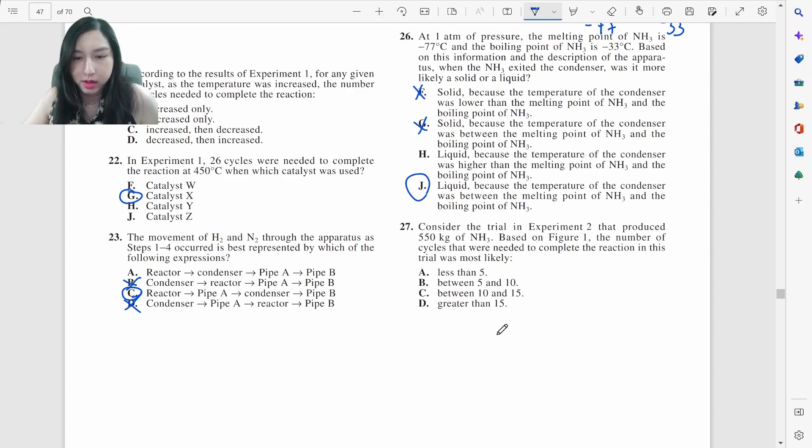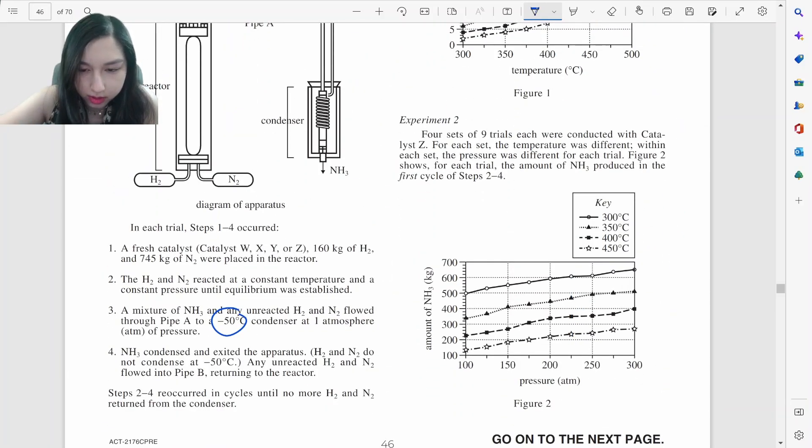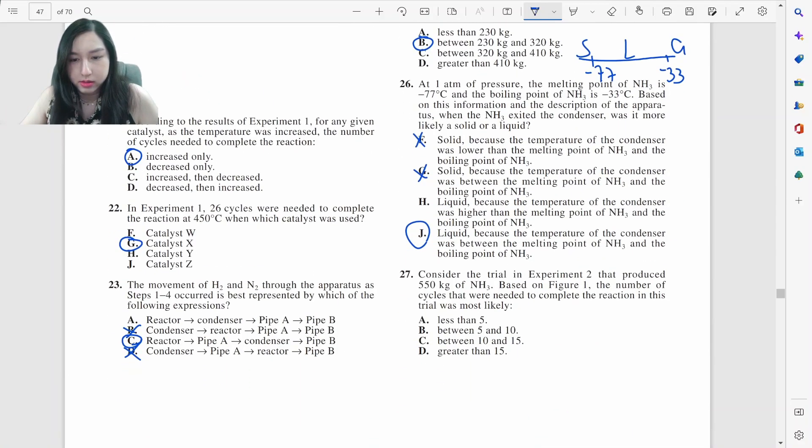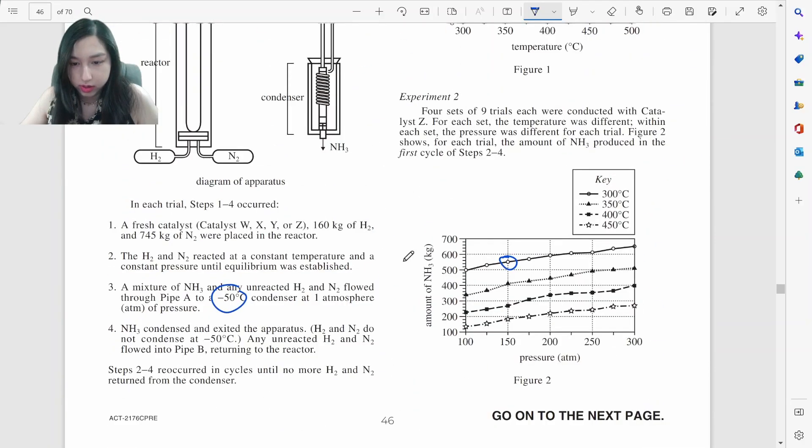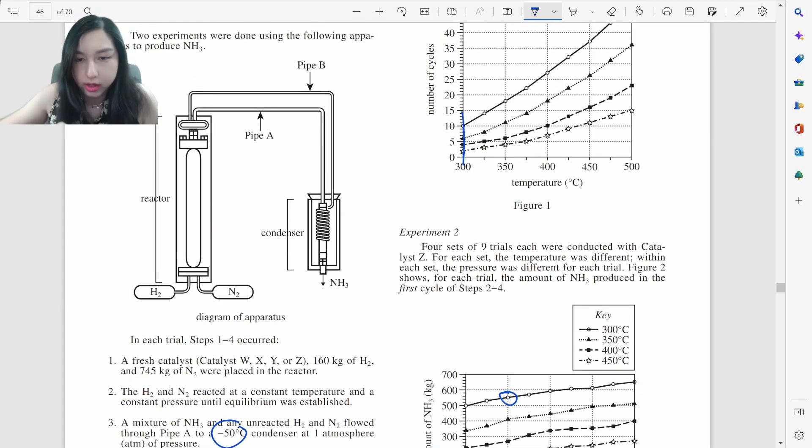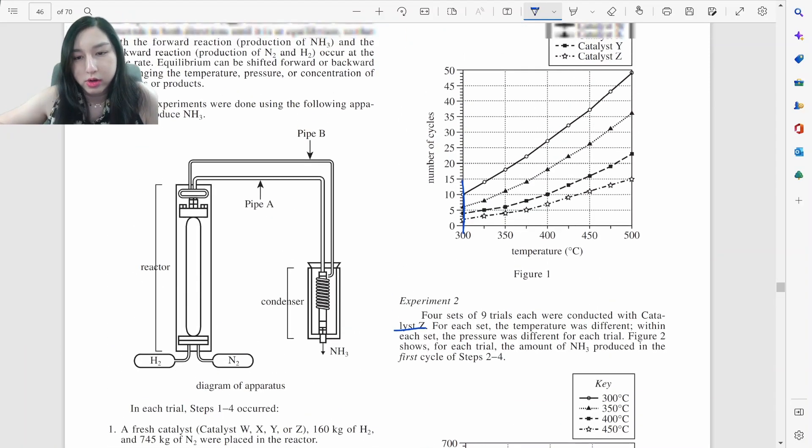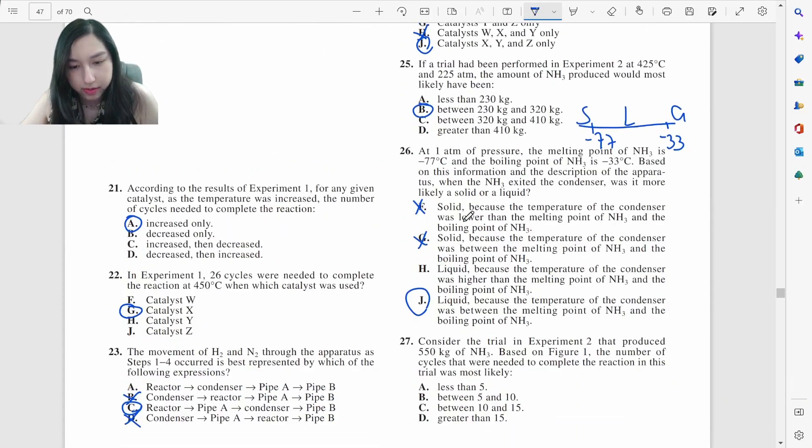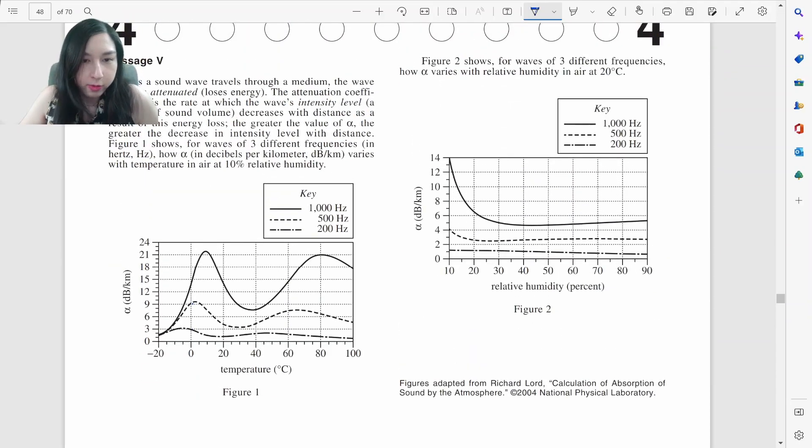Alright, let's look at number 27. Consider the trial in experiment two that produced 550 grams of ammonia. So experiment two, 550 would be about this one. Based on figure one, the number of cycles that were needed to complete the reaction is. So this is at the circle is 300, we're talking about 300. This was done with catalyst C. So we're talking about the star, catalyst C, something less than five.